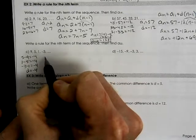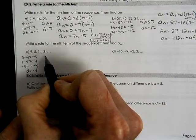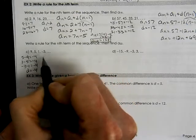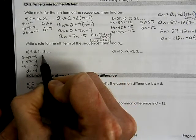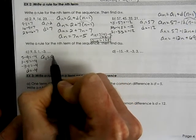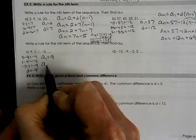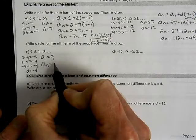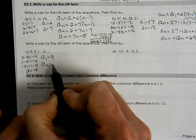So we know that our first term, we're going to write a rule. So our rule is A of 1 equals 9. A of n equals...